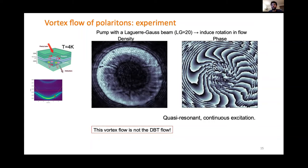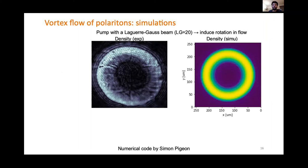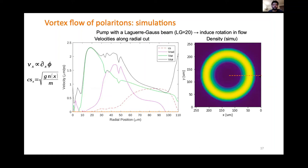What's important to note is that we have a driven-dissipative system, but we do not have a hole at the center by which polaritons leave the system — instead, polaritons go out everywhere. So our vortex flow is not the draining bathtub flow. This raises the question: how much of the analogy to the Kerr spacetime, to the rotating black hole, remains? The Kerr spacetime describes a black hole with a central singularity where everything falls in — so do we still have an event horizon and ergo surface in our rotating flow?